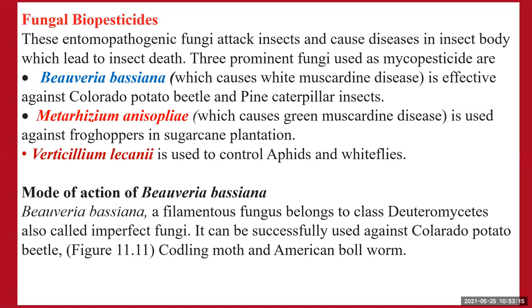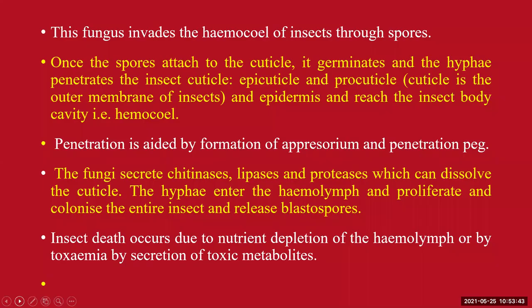Beauveria bassiana is a filamentous fungus belonging to the class Deuteromycetes, also called imperfect fungi. It can be successfully used against the Colorado potato beetle, pine caterpillars, American bollworm, and others. The fungus invades the insect's body cavity — called the hemocoel — through spores. Once a spore lands and attaches to the cuticle of the insect, it germinates on the cuticle.